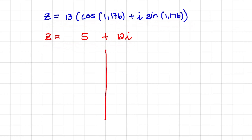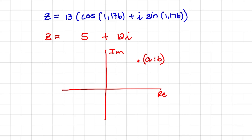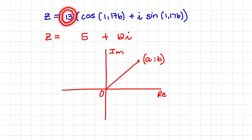Now, if you have forgotten what modulus argument form is, imagine that we have a point plotted on the complex plane. We can plot a complex number by using its a and b value — its real and imaginary value. We can find the distance between the origin and that point. That distance is called the modulus. And in modulus argument form, it's the number in front of the bracket. So the modulus of this expression is 13 — that is the length from the origin to the point.